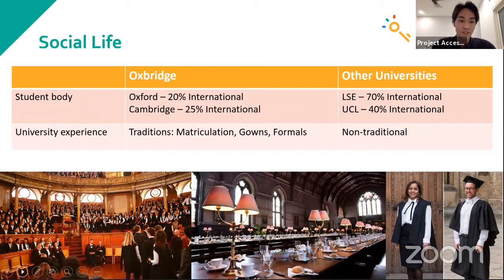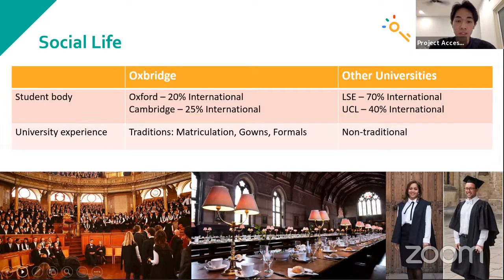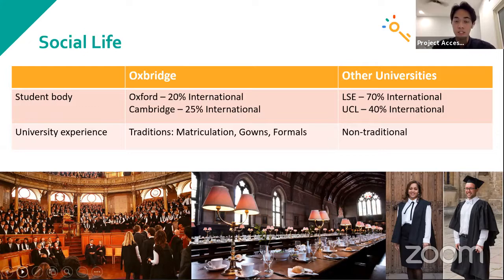Moving on to social life — a big thing I noticed, especially being an international student myself, is that the international student body at Oxbridge is not going to be as large as at other universities. I think one of the reasons for this is because the intake at Oxbridge is going to be smaller. If that is something that's important to you, you might want to consider looking at other universities.